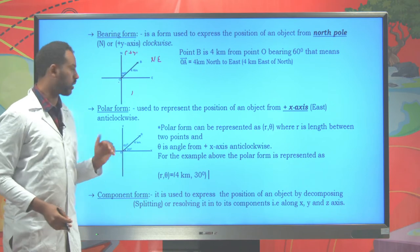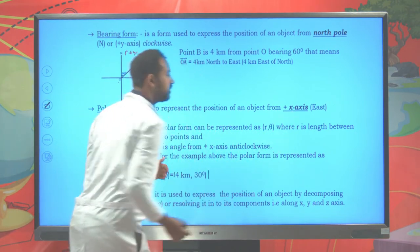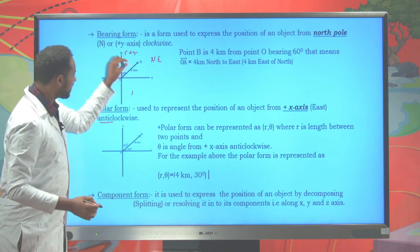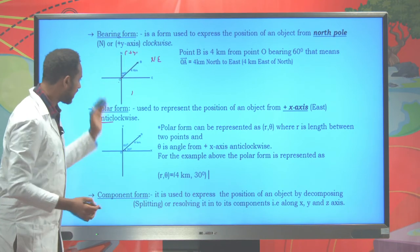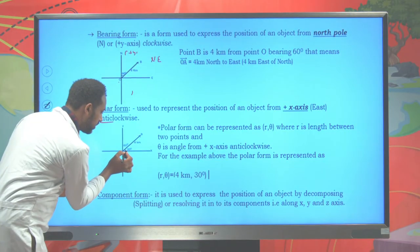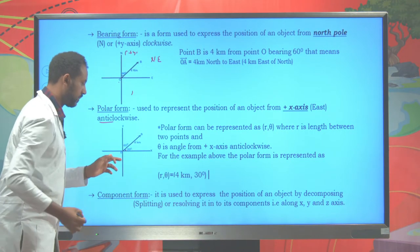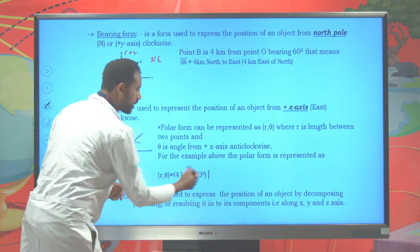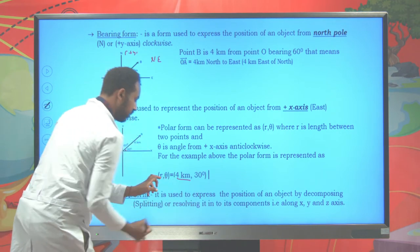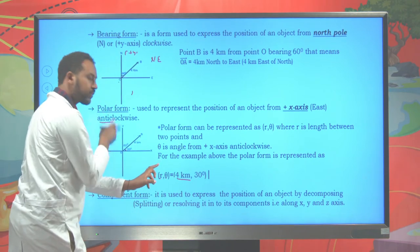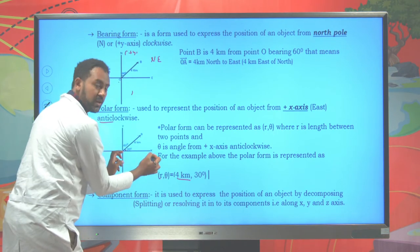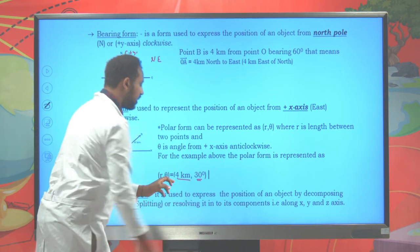The other technique is polar form. Polar form is used to represent the position of an object from the positive x-axis — or east — measured anticlockwise. The same point B, which was 60 degrees from north in bearing form, becomes 30 degrees in polar form, because we measure from the positive x-axis. To use polar form, you represent the distance (4 kilometers) and the angle measured from the positive x-axis, which is 30 degrees.